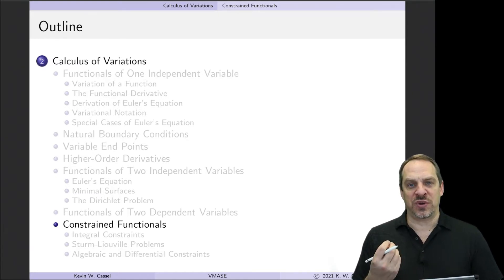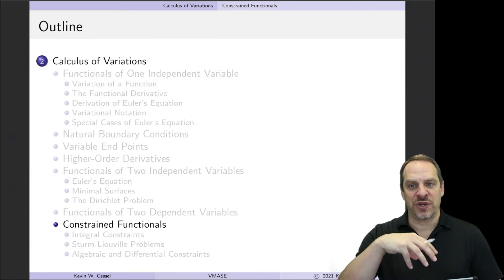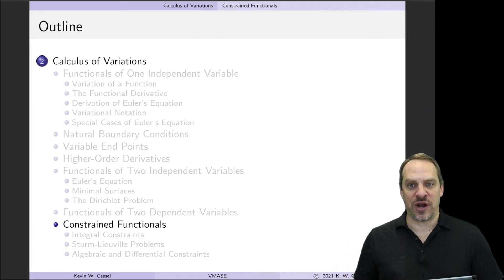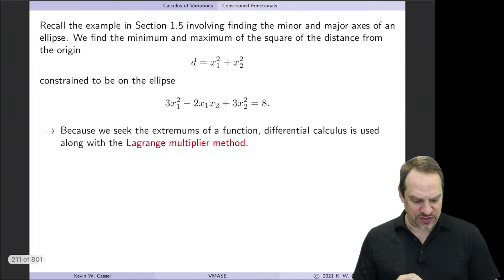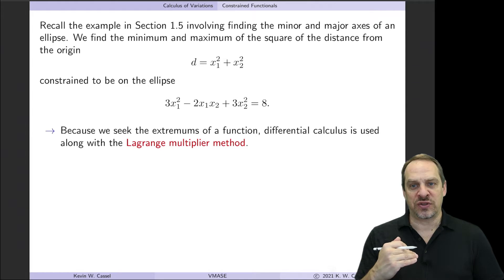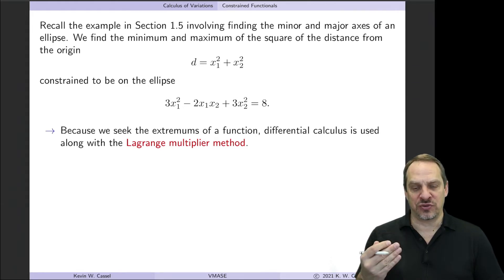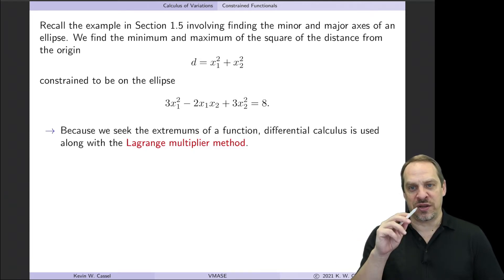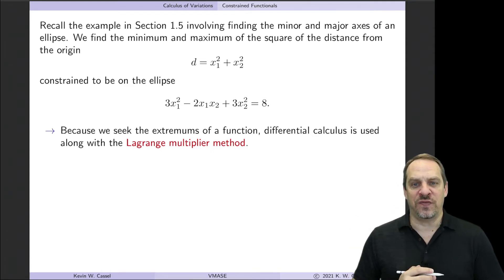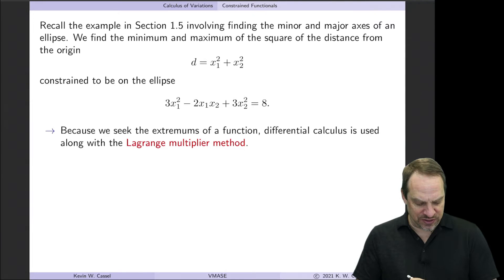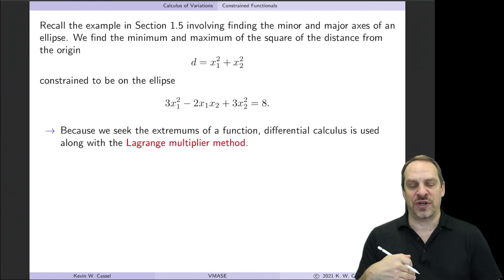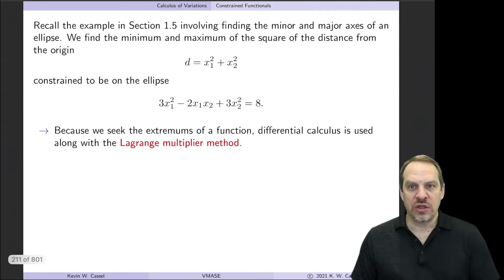If you remember the motivational example from chapter one with the liquid drop, we knew the volume of liquid used to form the drop — that is an integral constraint on the minimization of the total energy of the drop. We need to treat situations with such constraints. Back in chapter one, to determine extremums of functions subject to a constraint, we used the Lagrange multiplier method, with an example involving an ellipse to find the semi-minor and semi-major axis. Here we'll do exactly the same thing using the Lagrange multiplier method, but applied to functionals with integral constraints, and later algebraic as well as differential constraints.